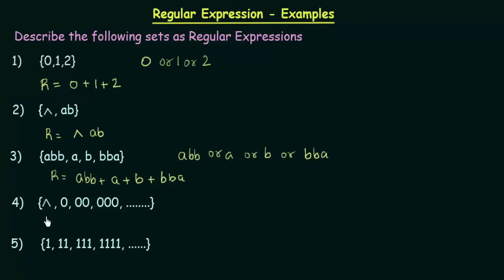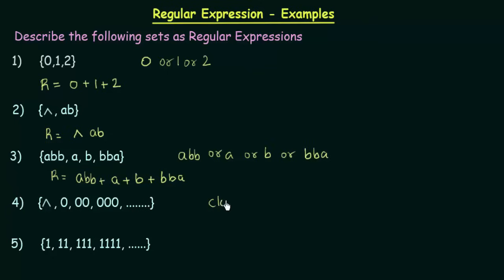Now let's come to the fourth one. Here we see the empty symbol, then 0, 00, 000, 0000, and so on. If you look carefully, these are any strings that can be formed by using the symbol 0 — putting together any number of zeros you want. So all the strings that can be formed using 0, along with the empty symbol, denotes the closure of 0.